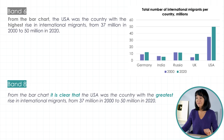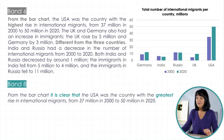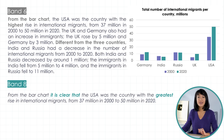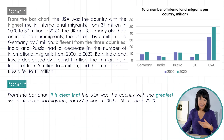Now let's read the rest. 'The UK and Germany also had an increase in immigrants. The UK rose by 5 million and Germany by 3 million. Different from the three countries, India and Russia had a decrease in the number of international migrants from 2000 to 2020. Both India and Russia decreased by around 1 million.' Paragraph 2 goes into detail. To be honest, the paragraph does highlight key features — band 6 task achievement — but does so in a kind of repetitive way.